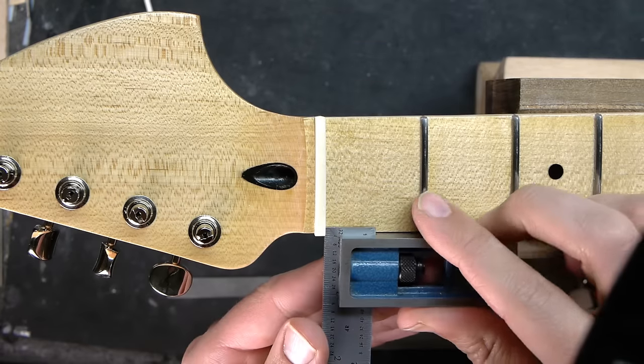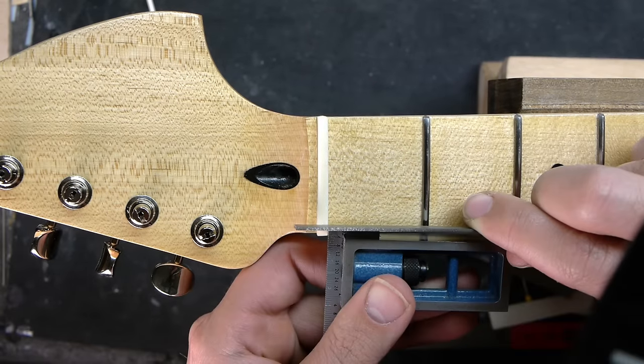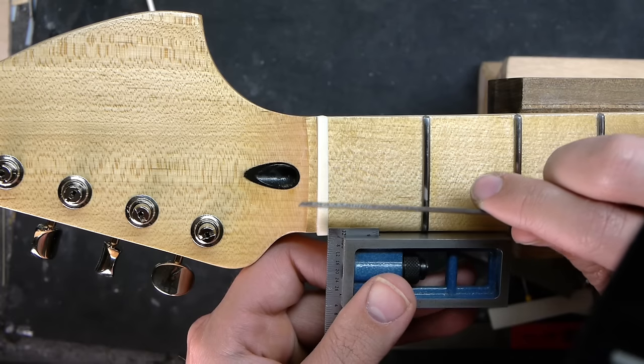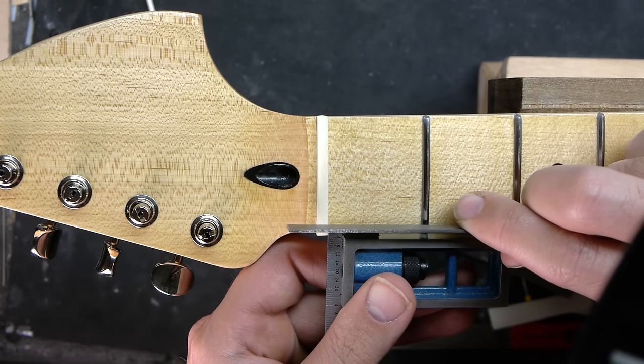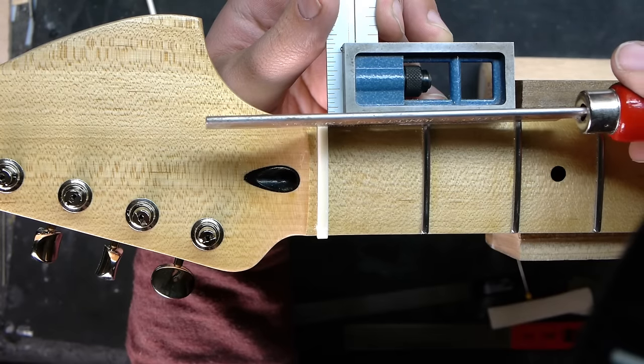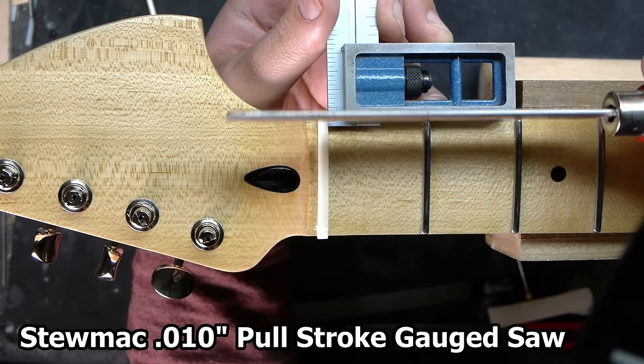The edge of the ruler can now act as a fence for your nut file. Place the nut file right up against the edge of the ruler, and keeping it in full contact with the edge of the ruler the whole time, cut the slot for the string. Flip the double square over, and repeat the exact same procedure on the other side.